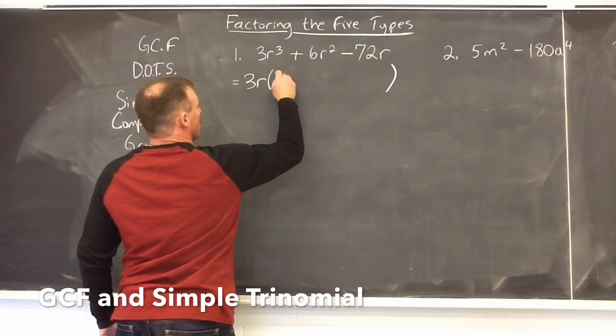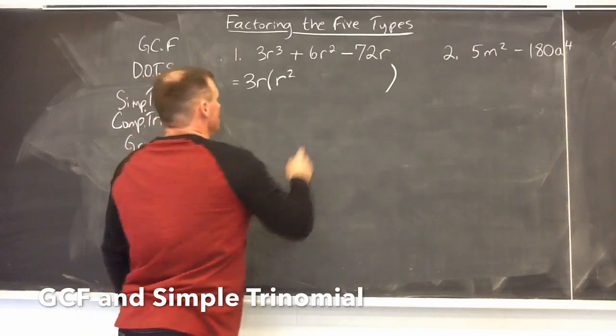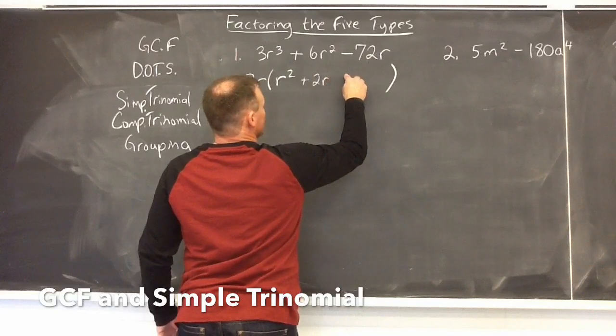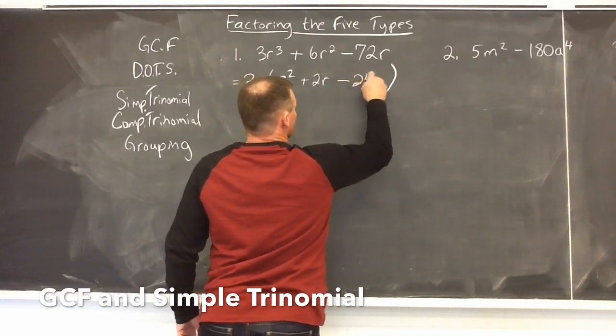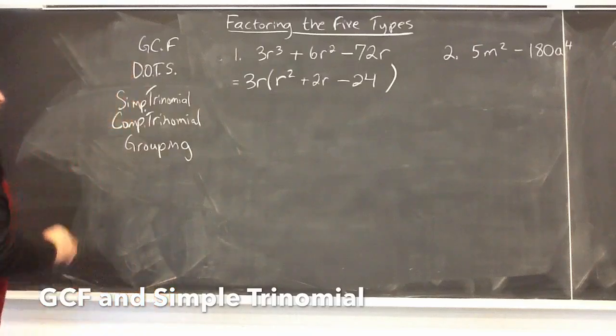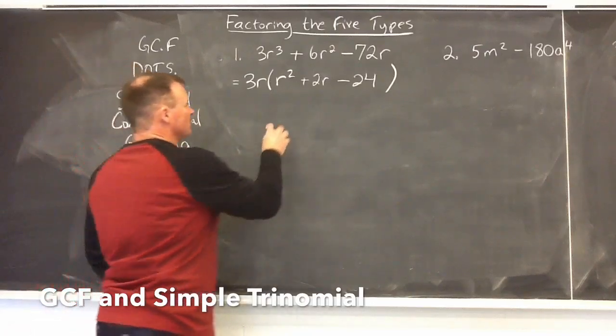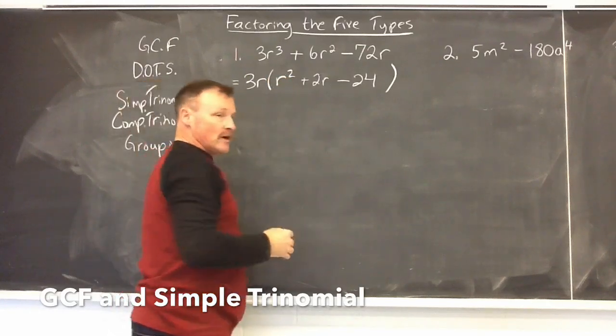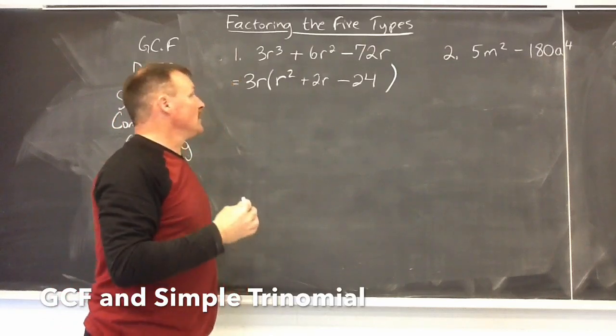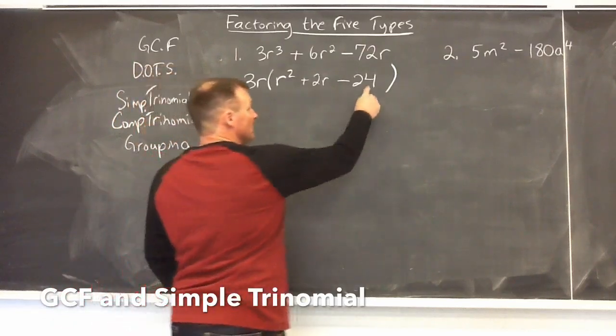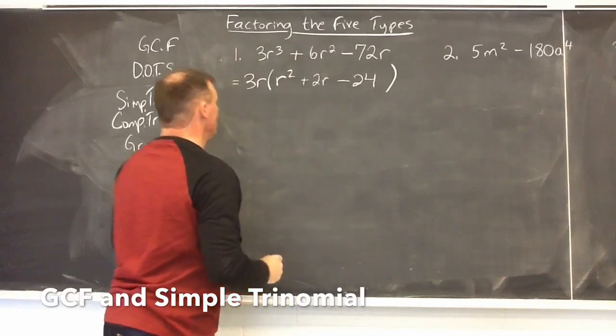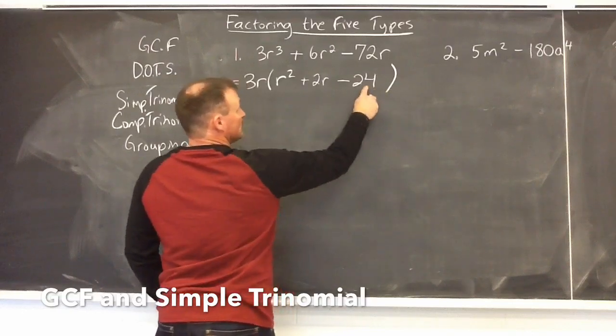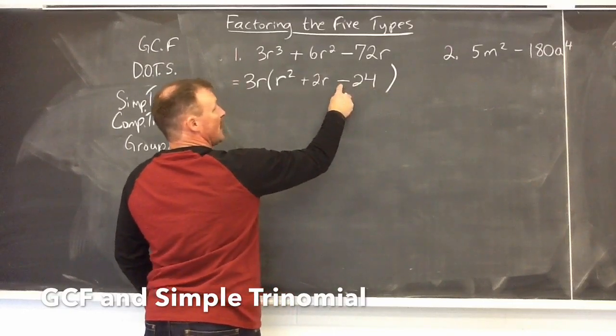Dividing this out of here, you're going to have R squared. Factoring it out of the 6R squared, 2R, and from the 72, I'm going to get negative 24 for my third term. So the reason that you know this is a simple trinomial is that the leading term has a coefficient of 1. I need to look at, and we always go from the right to the left when we do this discussion, factors of 24 that are going to subtract to give a 2.